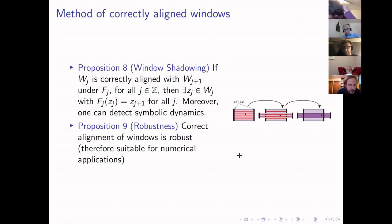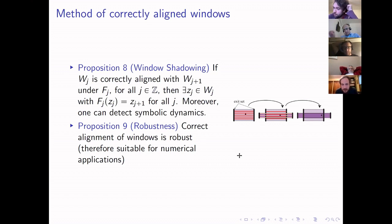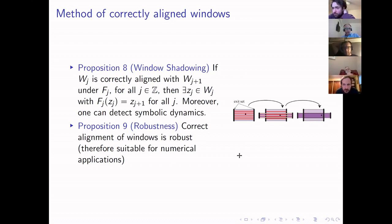One of the main results used in the shadowing lemma argument and in the computer-assisted proof with Capiński is: if you have an infinite sequence of windows that are correctly aligned, then there is always a trajectory that visits these windows in the prescribed order. Furthermore, correct alignment is robust: applying a sufficiently small perturbation, correctly aligned windows remain correctly aligned. This is an advantage when using numerical methods and computer-assisted proofs.